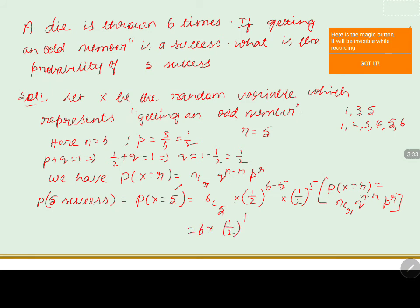Combining the powers, this equals six into one by two whole to the power of six. Since two to the power of six is 64, on cancellation we get the answer as three by thirty-two.